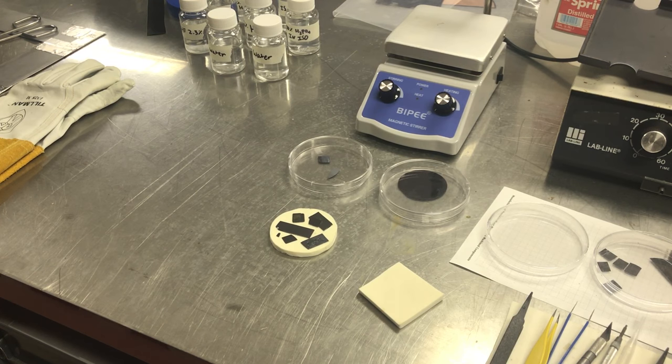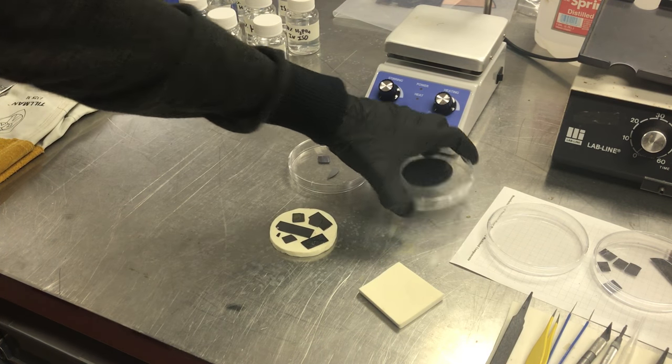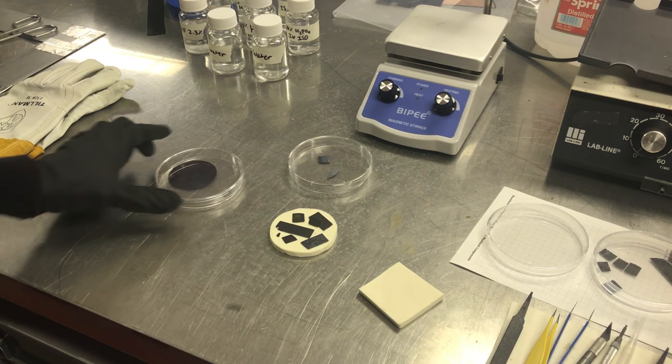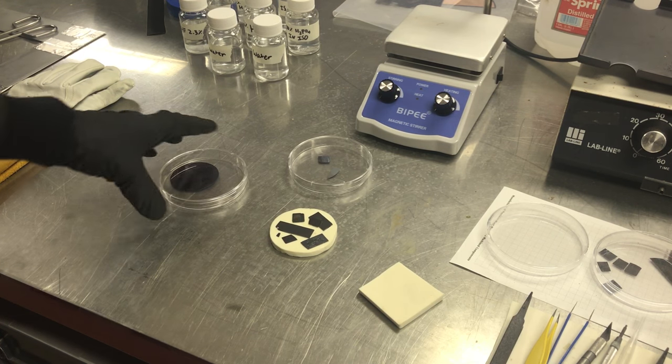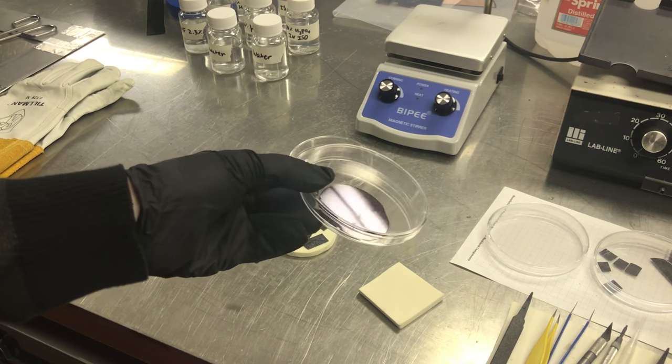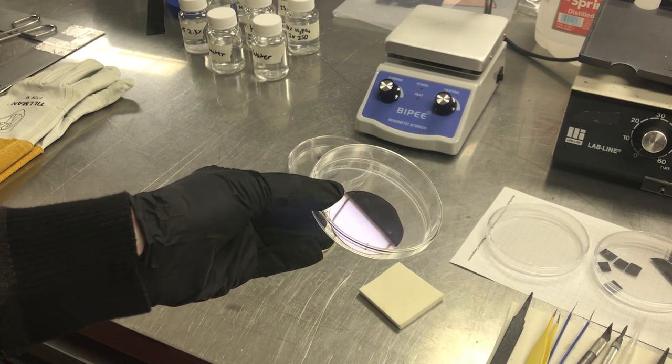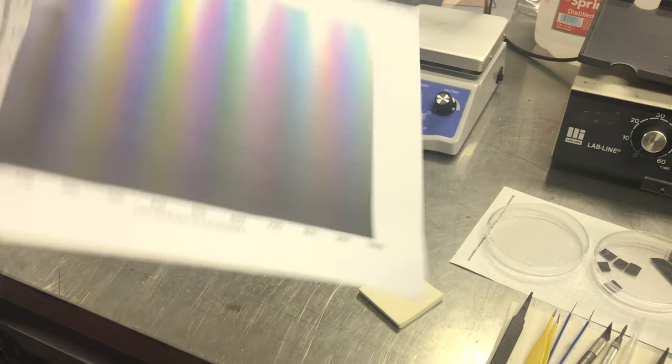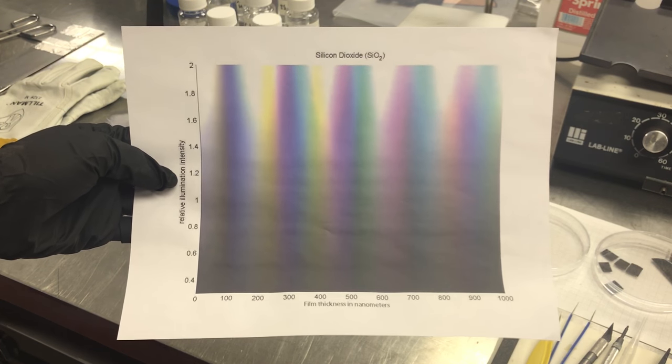First thing you'll need to do is to grow a 5,000 angstrom thick layer of silicon dioxide onto a P-type wafer. If you'd like to make a P-type MOSFET, you can also use an N-type substrate. Now, I've already grown this silicon dioxide layer because it can take many hours. This wafer here has a bluish tint to it when viewed under the correct lighting, and that indicates that it's the thickness that we want.